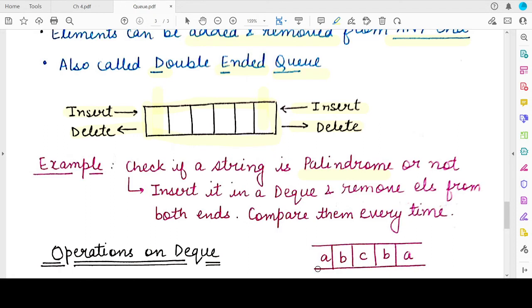For example, you have a string say A, B, C, B, A in a deque, and you have inserted this string in a deque. Now what you do when you have to check whether it's a palindrome or not, you extract or you delete or remove one element from the front and one element from the back in each iteration. Then you compare, if both these elements are same, you can proceed, there is a chance that this string might be a palindrome.